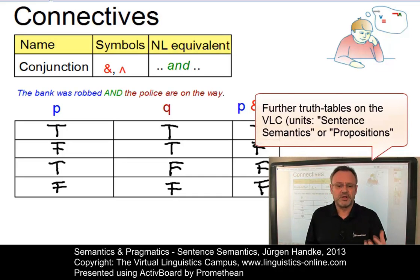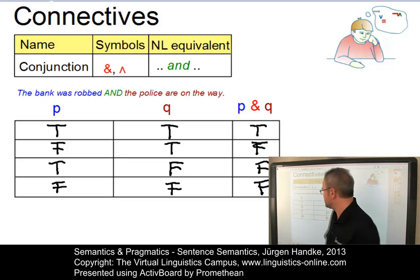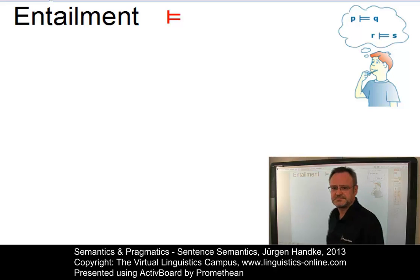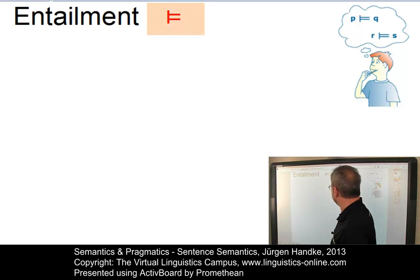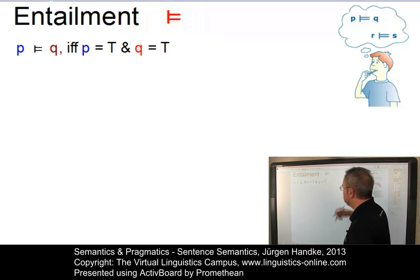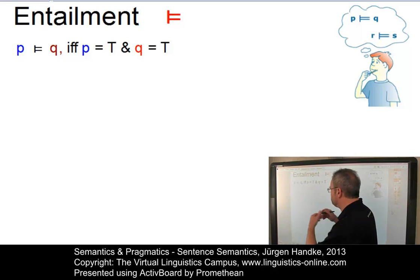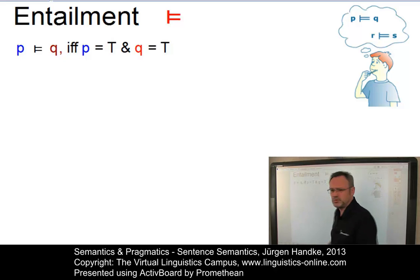Such truth tables can be constructed for all logical connectives. The important point is that we now have a mechanism of defining sentence meaning in terms of the truth values of its propositions. And from the propositions which are true, we can draw inferences. And these inferences are referred to as entailment. Formally, entailment is defined as any true inference from a true proposition. It is symbolized by this symbol here. And we can say, if P is true and Q is true, then P entails Q. Or the other way around, P entails Q if and only if P is true and Q is also true.